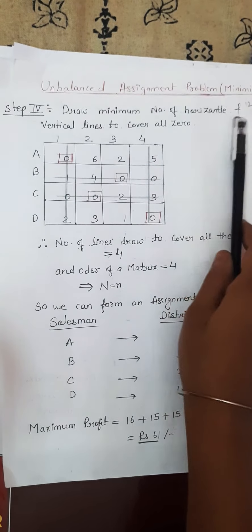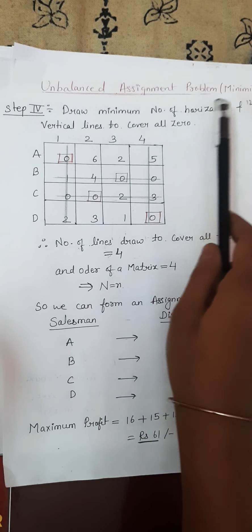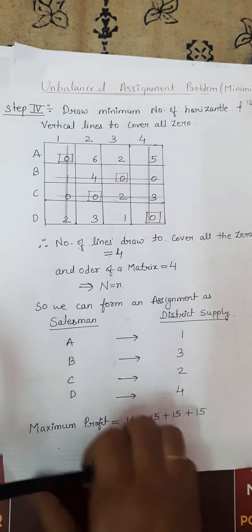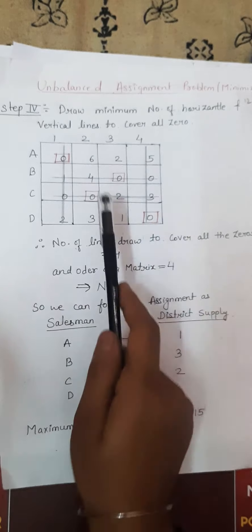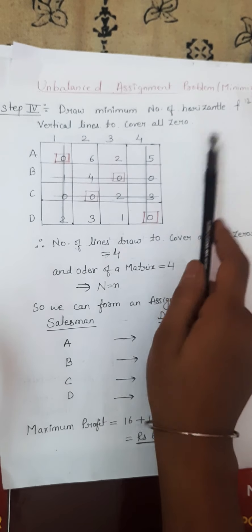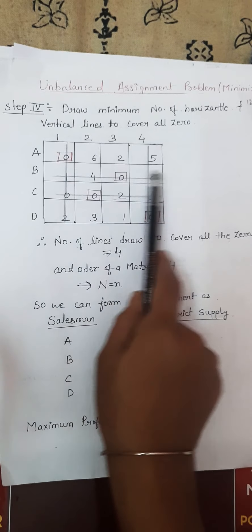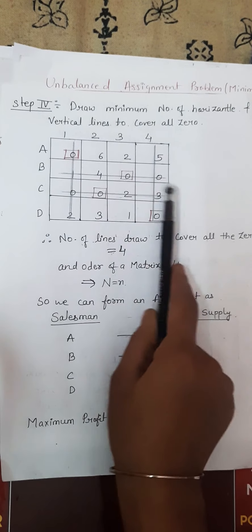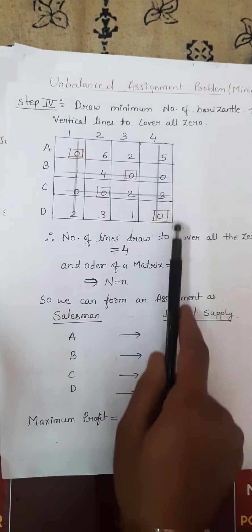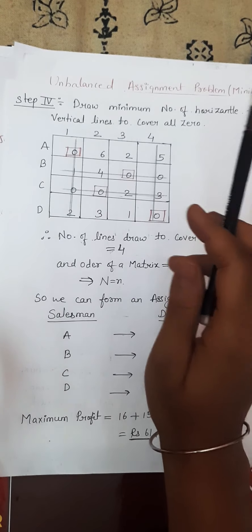Now we draw the minimum number of horizontal and vertical lines to cover all zeros. We select at least one zero in each row; if there is more than one zero in a row, we skip it. Here row 1 has one zero — we allocate it. Row 2 has one zero — we allocate it. Row 3 has two zeros — we skip it. Row 4 has two zeros — we skip it. Row 5 has one zero — we allocate it. Now we draw the horizontal and vertical lines.